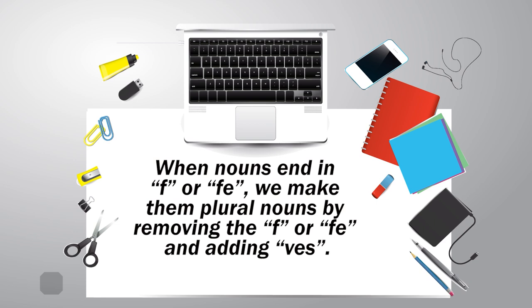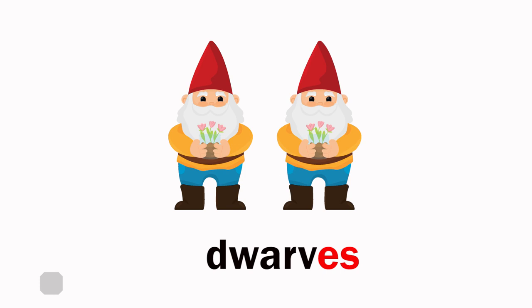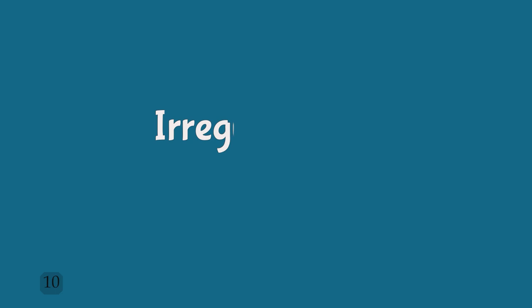When nouns end in F or FE, we make them plural nouns by removing the F or FE and adding VES. Leaf → Leaves. Wharf → Wharves. Knife → Knives.